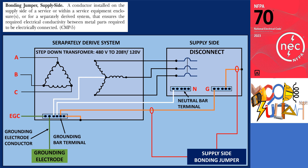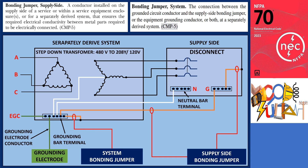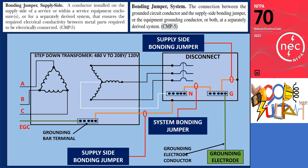A system bonding jumper is the connection between the grounded circuit conductor and the supply-side bonding jumper or the equipment grounding conductor, or both, in a separately derived system. It is used to connect the equipment grounding conductors or the supply-side bonding jumper to the grounded conductor of a separately derived system. The system bonding jumper can be located at the source or at the first system disconnecting means, as shown in another illustration. This type of bonding jumper ensures an effective path for ground-fault current to return to the source. Similar to the main bonding jumper at the service equipment, the system bonding jumper provides the necessary link between the equipment grounding conductors and the system grounded conductor to establish an effective path for ground-fault current to return to the source.